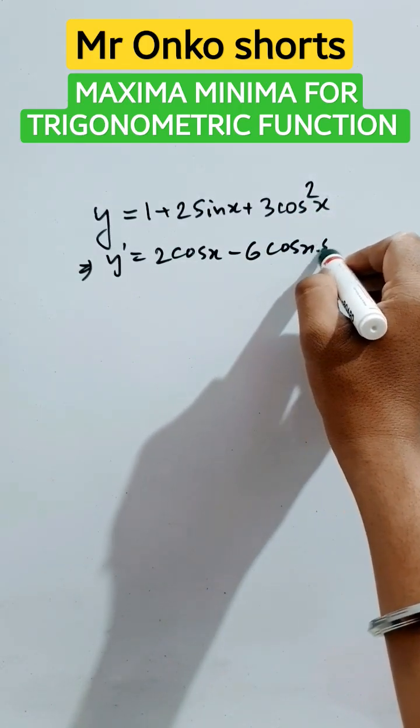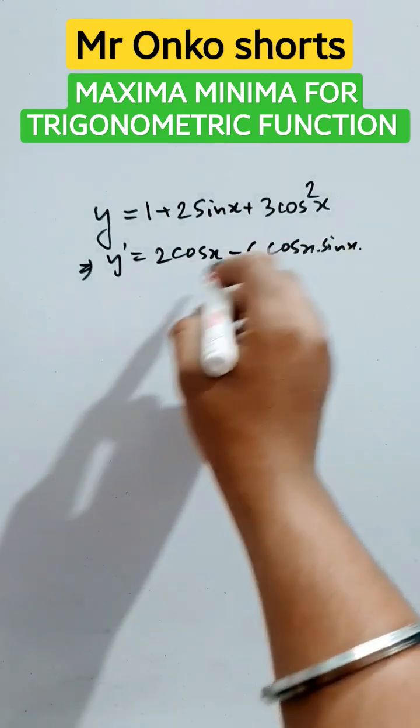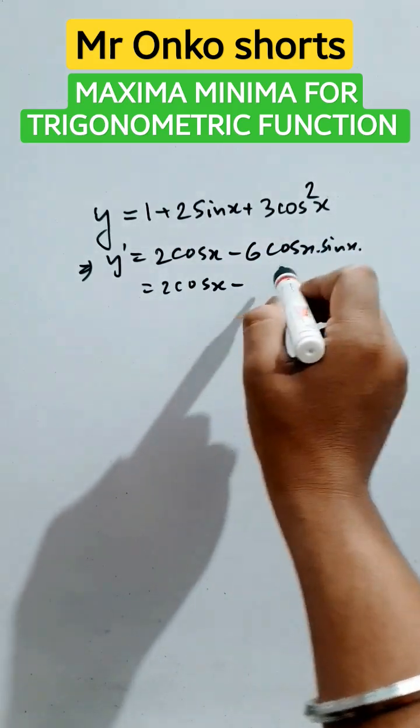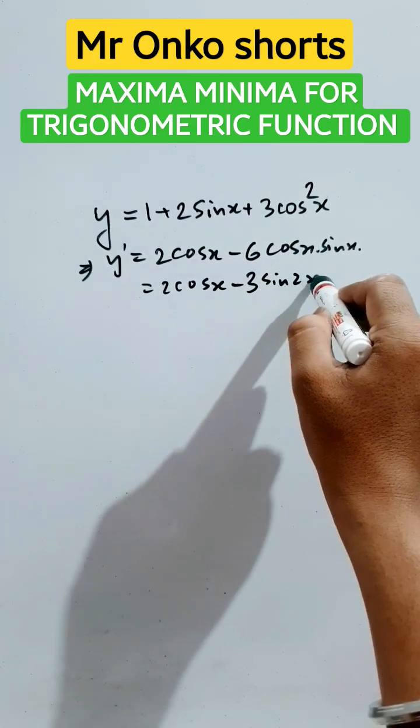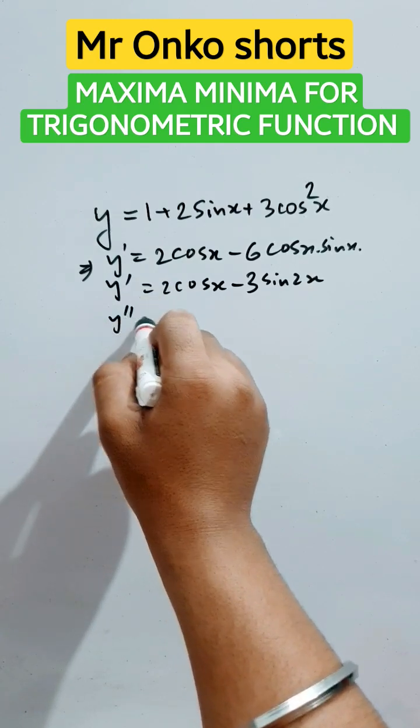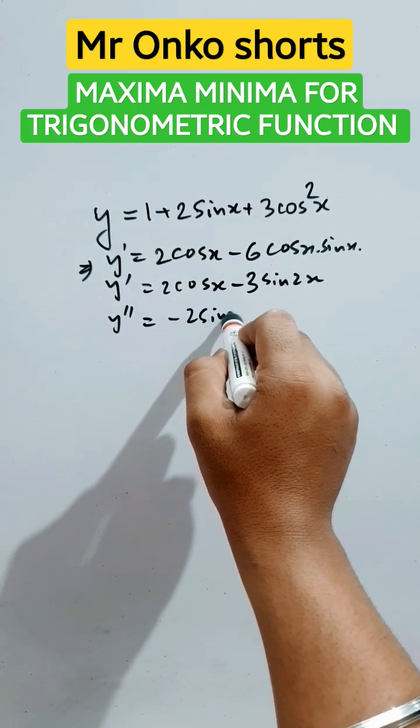Now here we can write it as 2cos x minus 3sin(2x). So take the second derivative, that will be -2sin x - 6cos(2x).